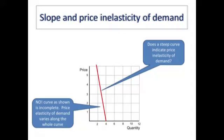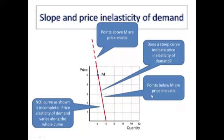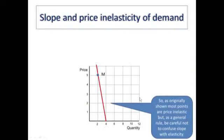Because the curve is actually not complete really. If we mark the midpoint off as M and we extend the curve up, then we see that points above M are price elastic. So the portion from M upwards is price elastic. And of course, on the extended curve it's also price elastic.